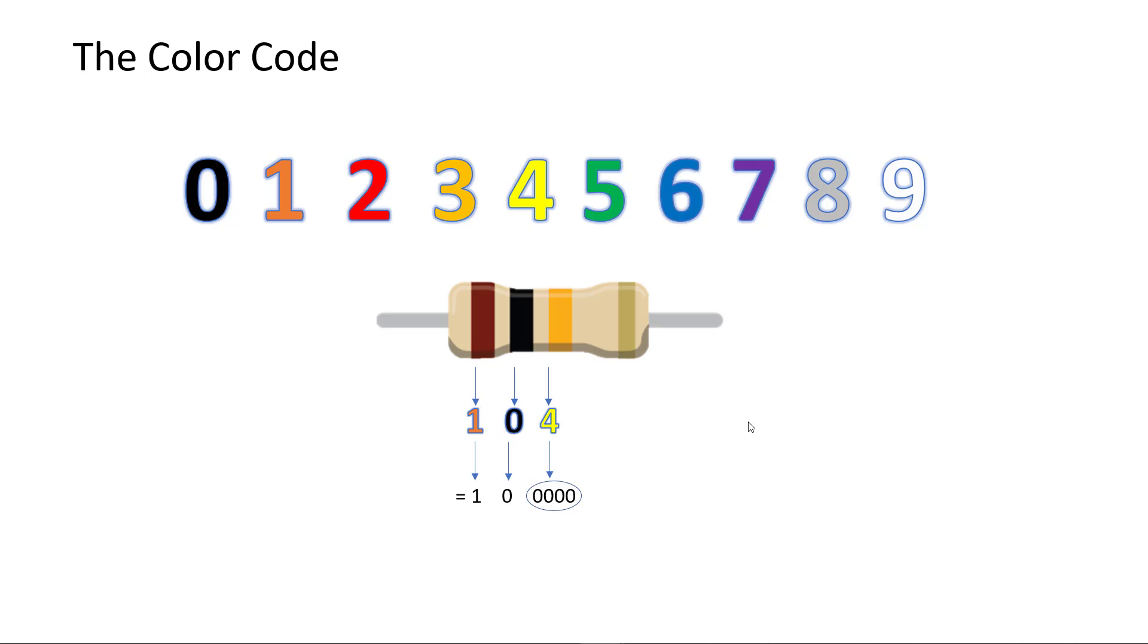The first two bands define the first two digits of the resistor's value, and the third denotes the power of 10 multiplier which corresponds to the number of zeros that follow. So in this example, we're looking at a 100,000 ohm resistor or a 100 kiloohm resistor.